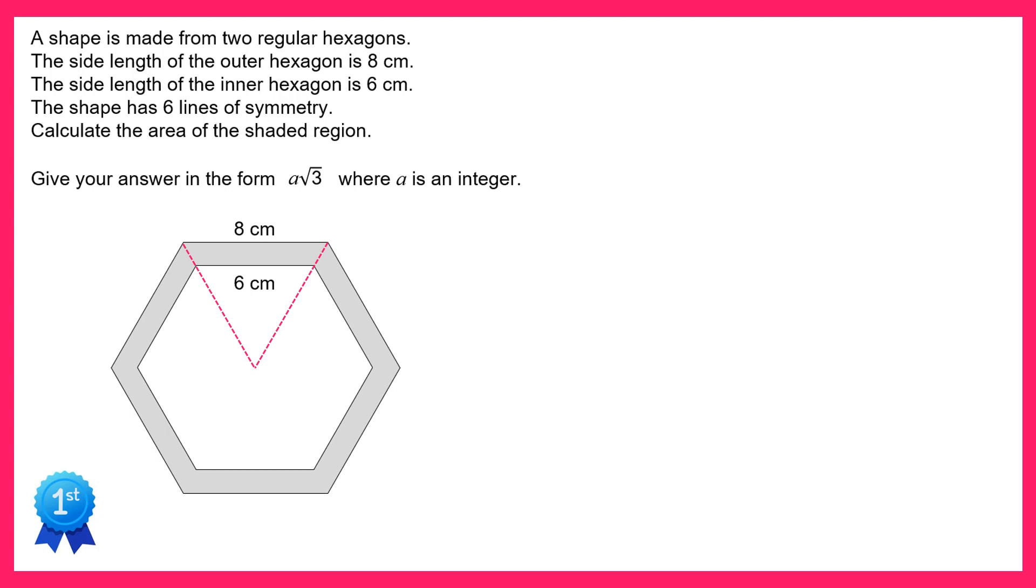We're going to focus in on this triangle a bit more so it's an equilateral triangle, and if we add in that extra line here we've got two lines: we've got eight on the outside and six on the inside.